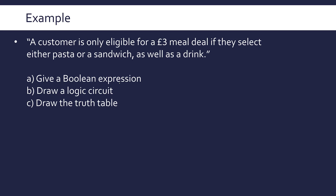Starting with our Boolean expression, let's assign variables for the key parts. The output is whether a customer gets a meal deal — let's give that the letter M. The customer selects either pasta or a sandwich, so pasta gets P and sandwich gets S. As well as a drink — a drink is another Boolean property, either they have one or they don't — let's give that D.